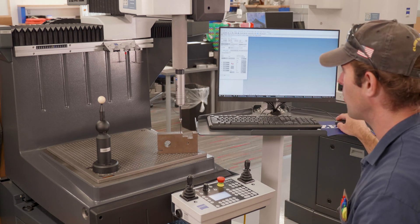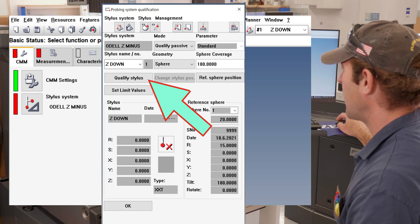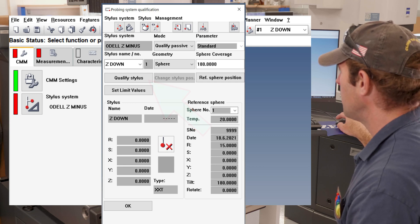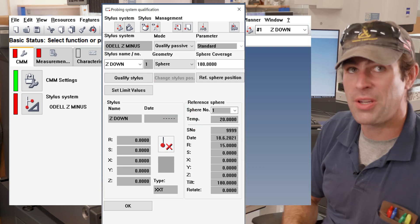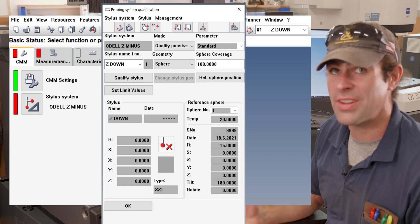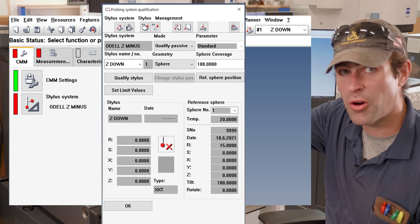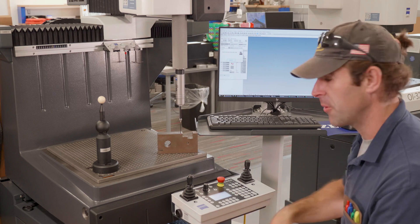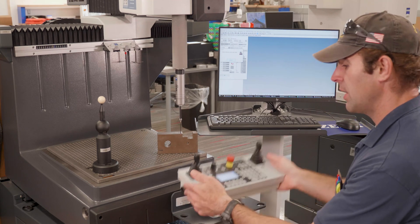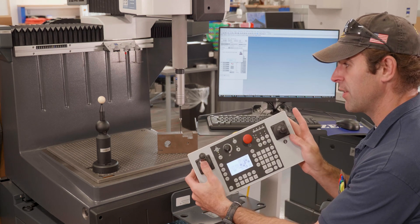I'm just going to go right here to qualify stylus. I'll answer okay to the probing behavior, and then it asks me to probe in the direction of the stylus shaft. In this case I'm going to probe straight down onto the reference sphere. So I'll drive the machine. If you remember, on the left is up and down, the right is left and right.